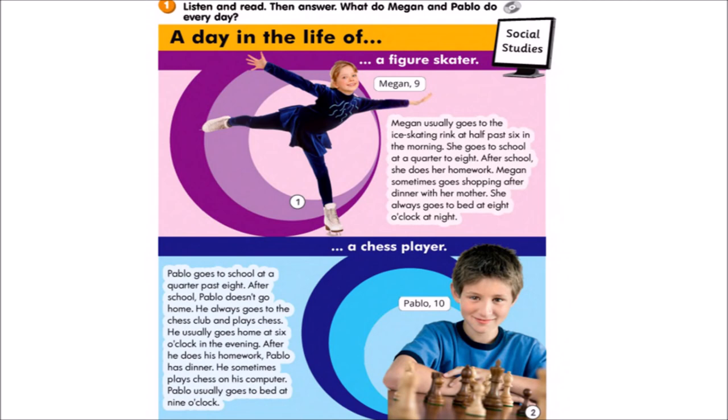Megan, age nine. Megan usually goes to the ice skating rink at half past six in the morning. She goes to school at a quarter to eight. After school, she does her homework. Megan sometimes goes shopping after dinner with her mother. She always goes to bed at eight o'clock at night.